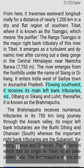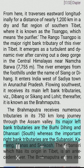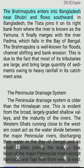Flowing southwest, the Brahmaputra receives its main left bank tributaries — the Dibang (or Sikang) and the Lohit — after which it is known as the Brahmaputra. The Brahmaputra receives numerous tributaries in its 750 km journey through the Assam valley. Its major left bank tributaries are the Burhi Dihing and Dhansiri south, while the important right bank tributaries are the Subansiri, Kameng, Manas, and Sankosh. The Subansiri, which has its origin in Tibet, is an antecedent river.